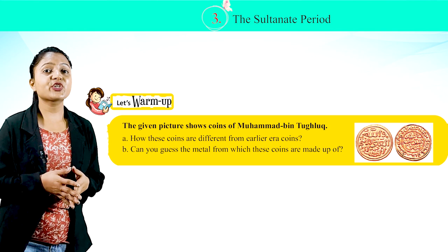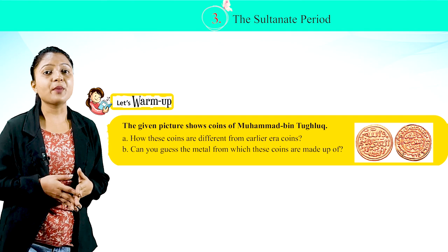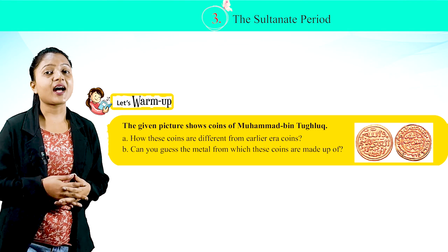The given picture shows coins of Mohammed bin Tughlaq. How are these coins different from earlier era coins? Can you guess the metal from which these coins are made?